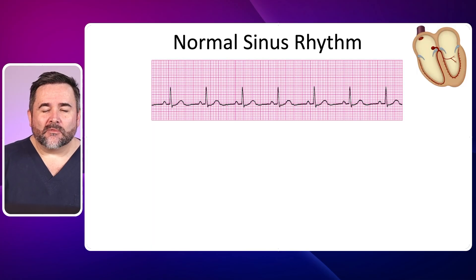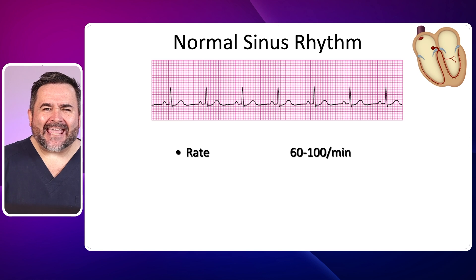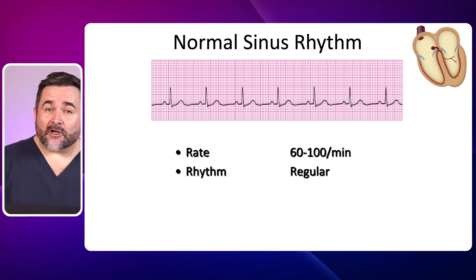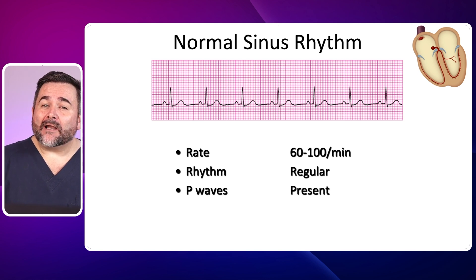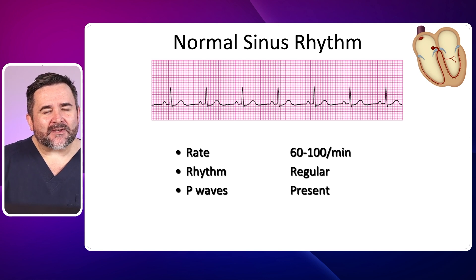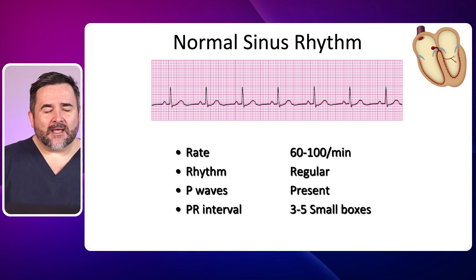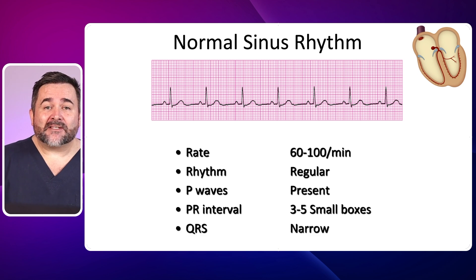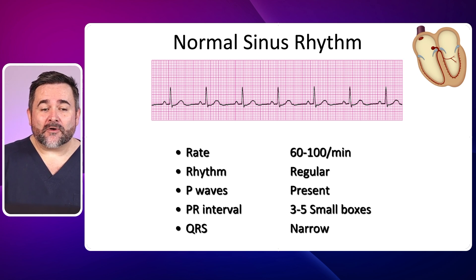Let's look at a normal sinus rhythm. The rate is 60 to 100 per minute, as it originates from the SA node which fires at a rate of 60 to 100. The rhythm is regular, meaning your R to R distances or intervals are constant. P waves are present, and we see one positive or upright P wave in lead 2 for every QRS and vice versa, meaning 1 to 1 conduction. The PR interval is 3 to 5 small boxes, meaning 0.12 to 0.2 seconds. The QRS complex is narrow, meaning 3 boxes or 0.12 seconds or less.